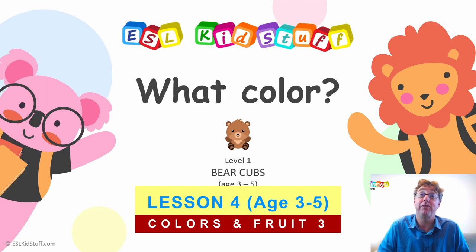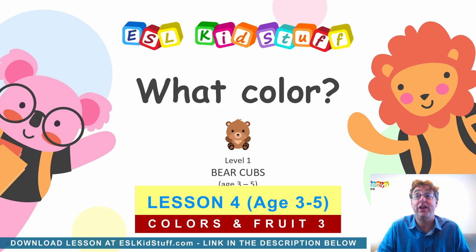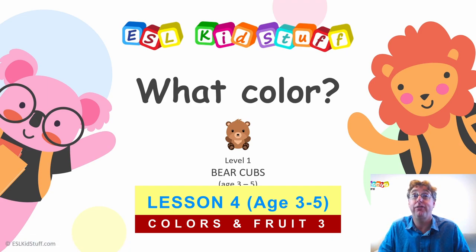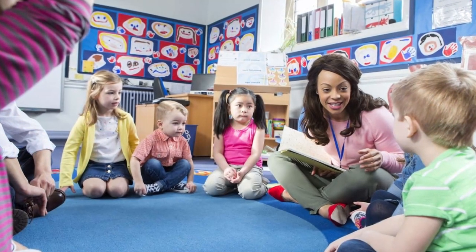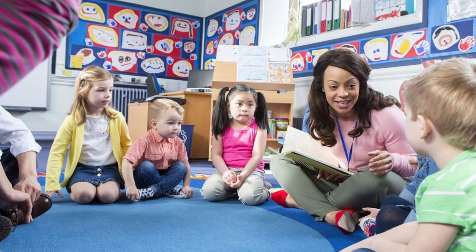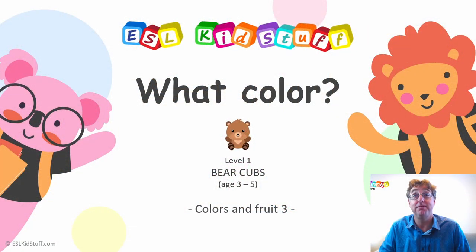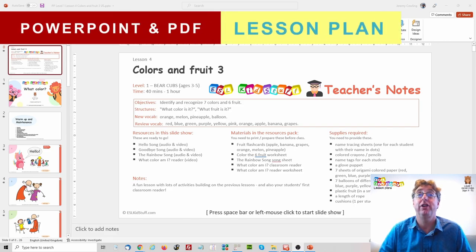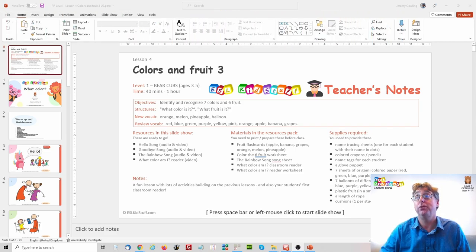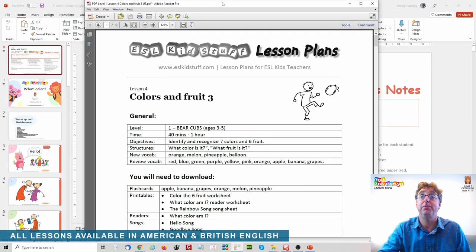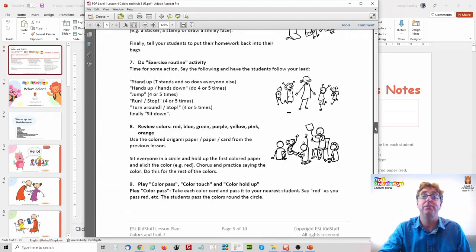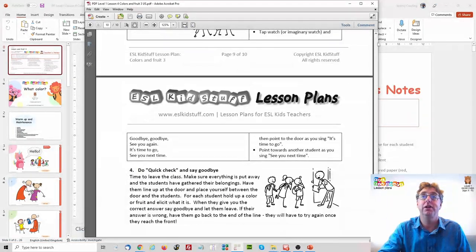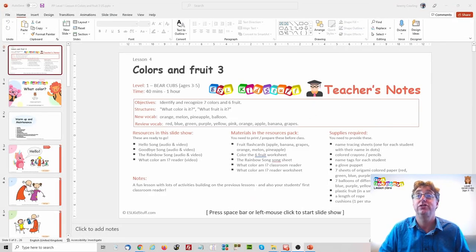We're following on from last lesson where the students learned seven colours and they currently know three fruits. They'll expand on that by reviewing and increasing their vocabulary in those topics, and we'll even have a really fun reader and some new games to play. The lessons are available in PowerPoint and also as a PDF download where you can follow through the lesson step by step with your students, but today we'll be using the PowerPoint slides.